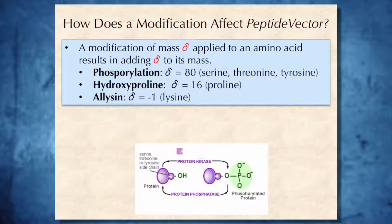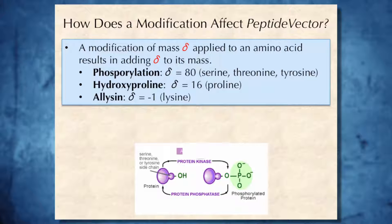How does a modification affect a peptide vector? If you think about this, a modification is simply a change in the mass of an amino acid, if we limit ourselves to a computational analysis of modification. A modification of mass delta applied to an amino acid results in adding delta to its mass. For phosphorylation, for example, delta is equal to 80.